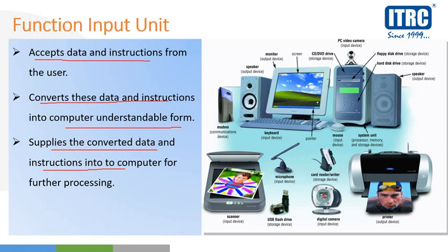Let us take an example. Hamne input diya yaha se — microphone ek input unit hai. Yeh accept karti hai voice — humari voice leti hai. Computer does not understand that voice — wo ye voice nahi samajhta. Toh phiri ye microphone isko convert karti hai into signals, toh computer signal samajhta hai. Jab yeh input device ne accept kiya humare se — hamne kuch voice record ki — phiri wo voice convert ho gayi, and after converting, yeh supply karti hai computer system ko for further processing — phiri hum uske saath edit ya kuch karna hooga.